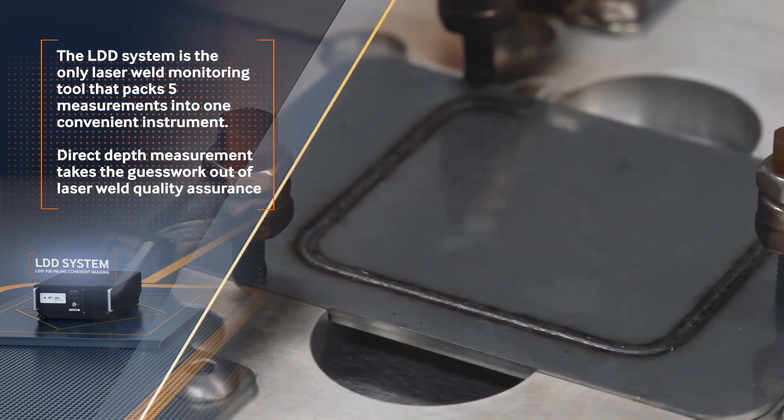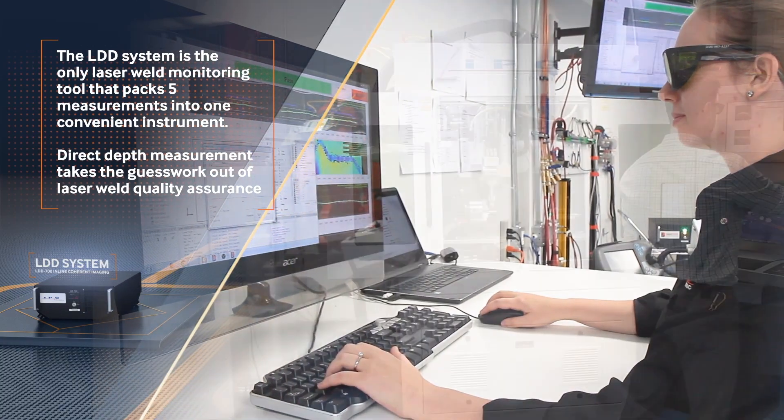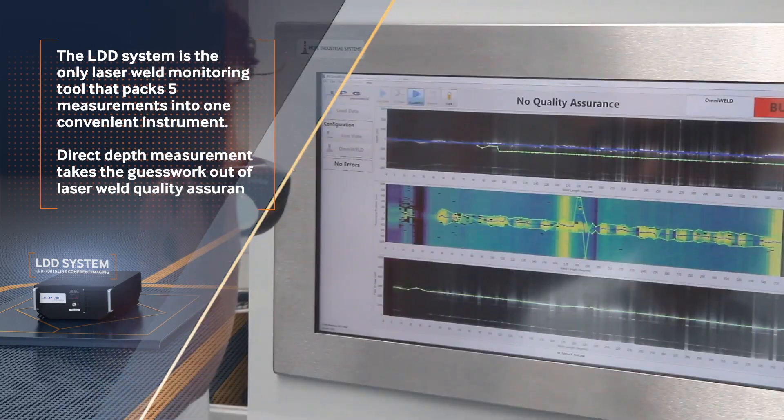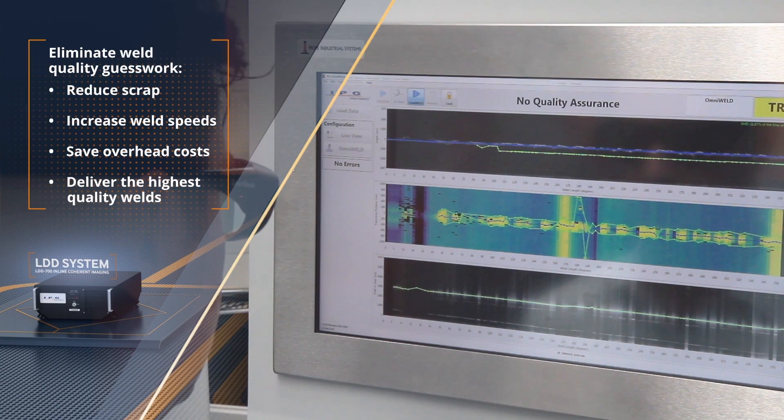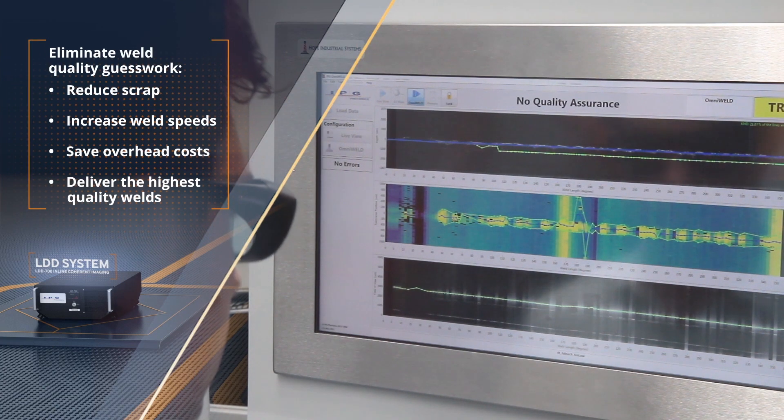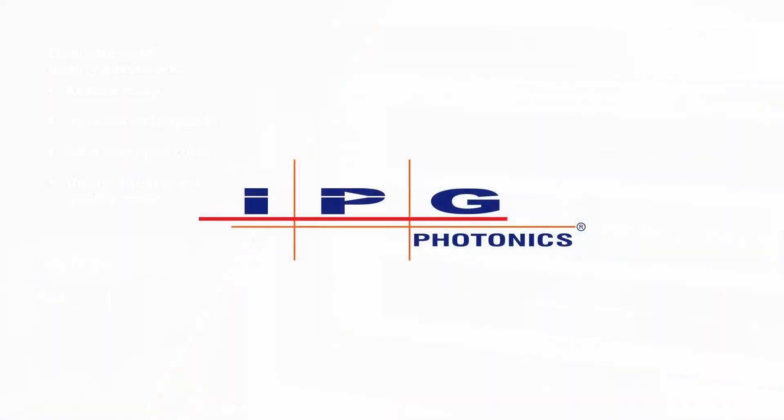Take the guesswork out of weld quality. The LDD 700 real-time monitoring system provides operators with instant results to reduce scrap, increase speeds, saving time and money, while improving the overall quality of welds.